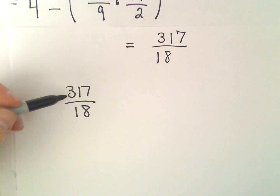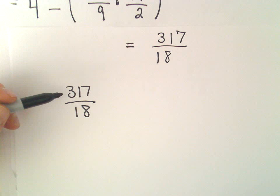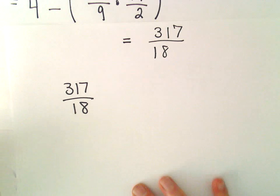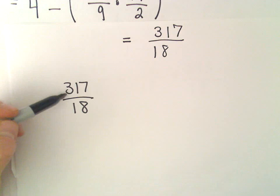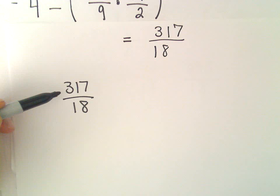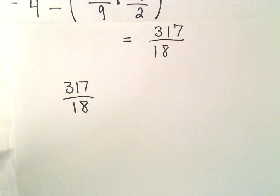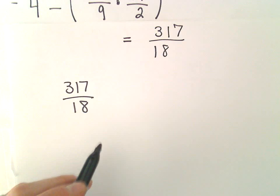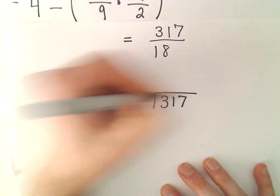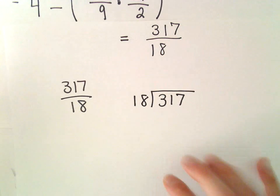Now the question to me is, does this reduce? That's a good question. Certainly we can make it into a mixed number. Maybe that's a good way to see if it will reduce. Because I'm thinking 317, is that a prime number? Is it not a prime number? There's different ways we can think about that. But I think what I'm going to do is just make it a mixed number here. So we have 317 divided by 18.